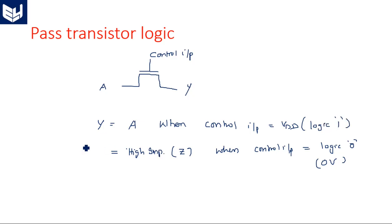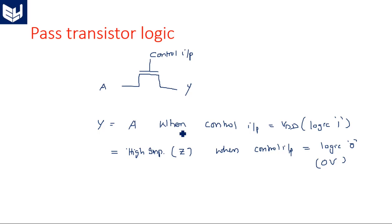The output voltage is completely dependent on the control input. If the control input allows the gate to pass the input to the output, then output equals input; otherwise it is simply high impedance or open circuit. For a PMOS transistor the cases are reversed: Y equals A when control input is 0, and Y equals high impedance when control input equals VDD.